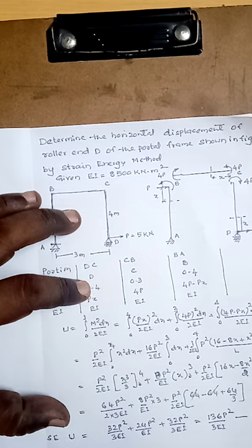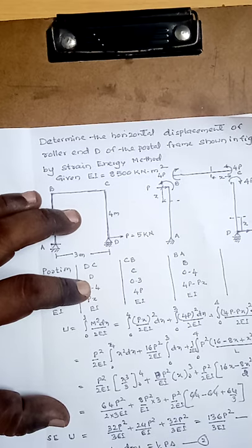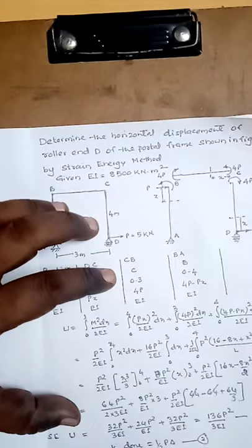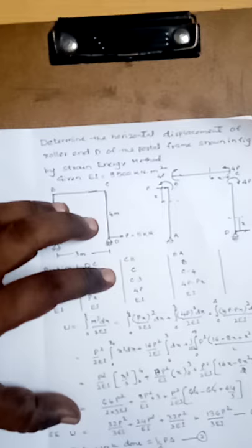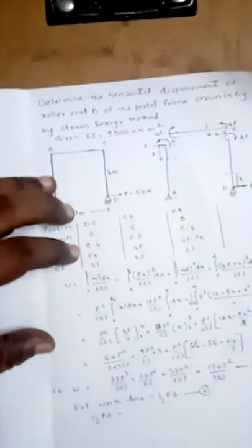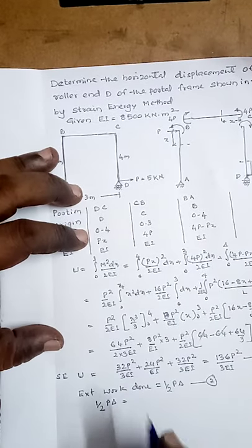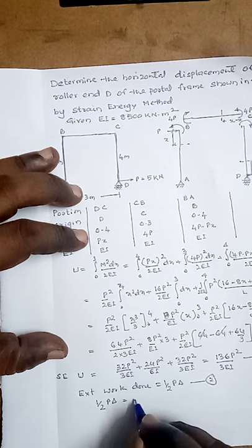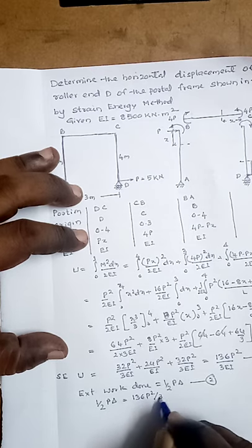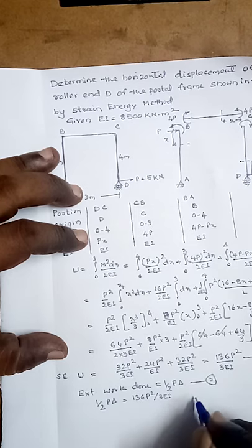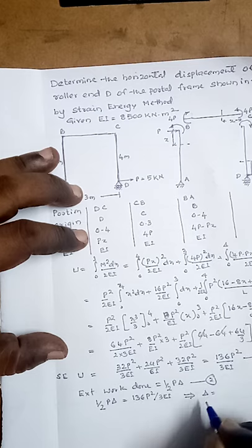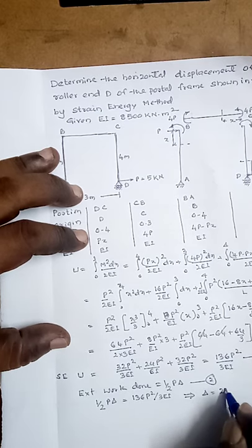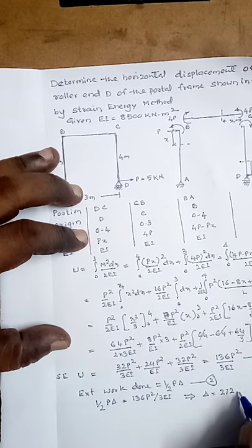External work done = ½ × P × δ — equation number 2. When equilibrium is reached, both are equal. Equating external work done and internal strain energy: ½Pδ = 136P²/3EI. Solving for δ: δ = 272P / 3EI.